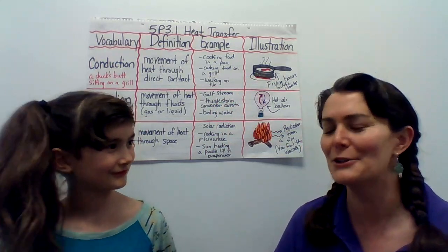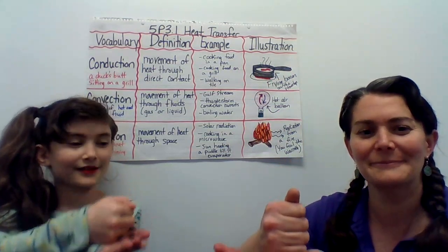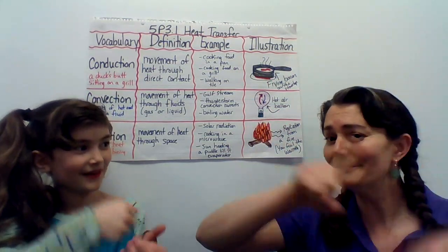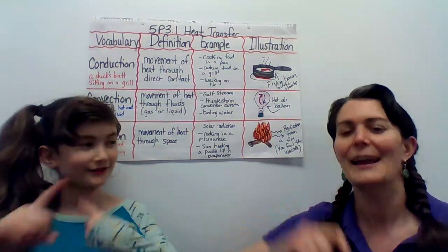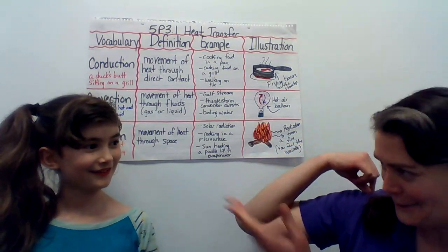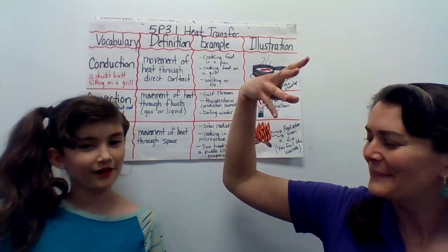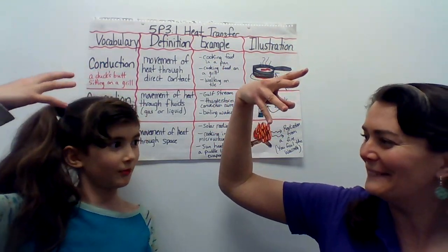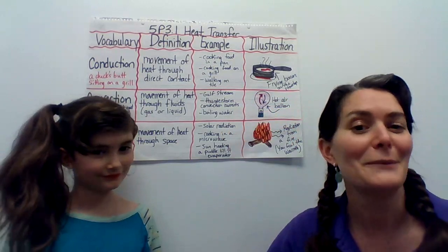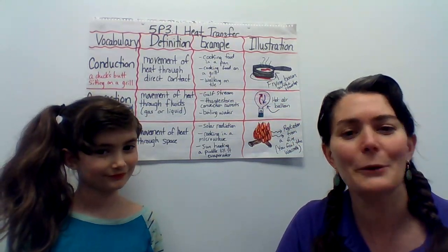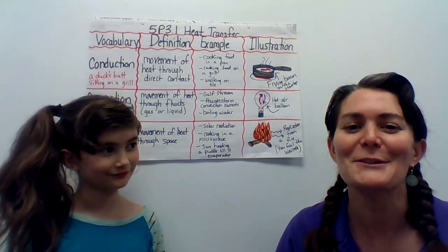So let's start at the beginning. Conduction — a duck's butt sitting on a grill. Convection — currents of hot or cold in a fluid. And radiation — the sun's heat radiation shining on me. There are some little mnemonic helpers to help stick that information in your brain. If you have any questions, don't hesitate to call me, email me, Dojo me, or Google Classroom me. Miss you guys, I'll talk to you soon — bye!